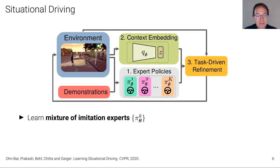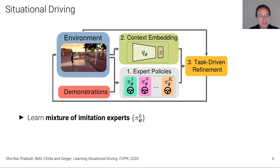If you train an agent using imitation learning, you train it on an offline dataset. That agent will produce the right action for all images very close to the training data, but as soon as you deviate a little, the agent will start to fail. There are multiple strategies to overcome this. We are presenting two of them here at CVPR: one is learning multiple imitation experts instead of a single one, each specializing to a particular situation — that's why we call the approach situational driving — and optimizing the combination using task-driven policy refinement with actual rewards from the environment.